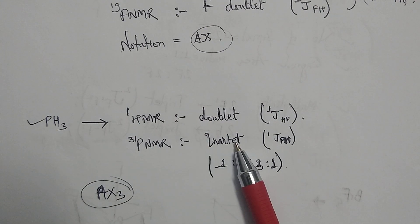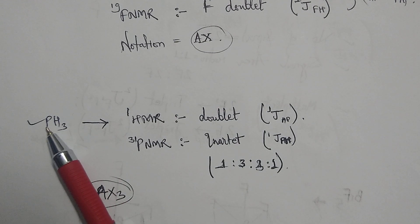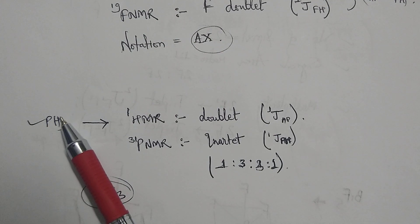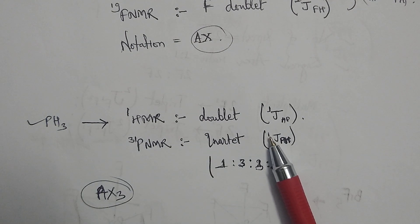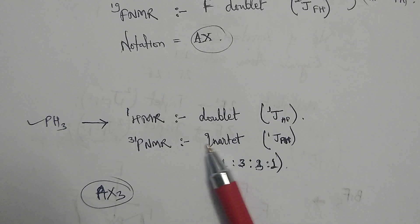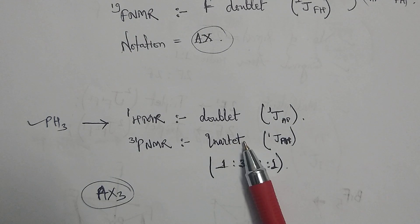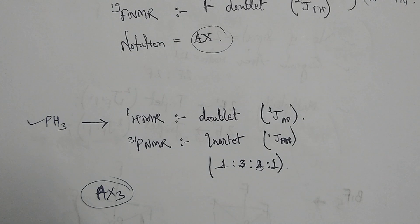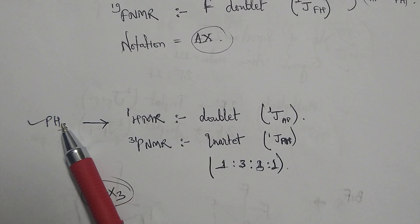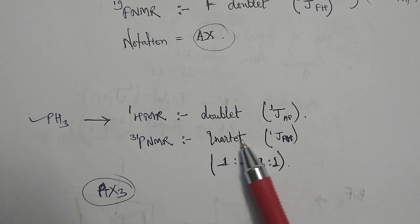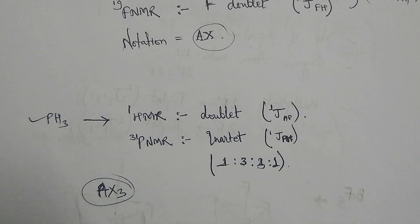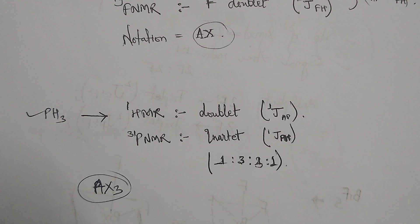When we do the 31P NMR (phosphorus NMR) we will get the quartet signal for the phosphorus, because it couples with all three protons, giving the quartet signal with the one-bond coupling constant 1JPH. The quartet multiplicity has an intensity ratio of 1:3:3:1 per Pascal's triangle. Since the protons give a doublet and phosphorus gives a quartet, we decrease each value by one to get A with subscript 1 and X with subscript 3, giving the Pople notation AX3.